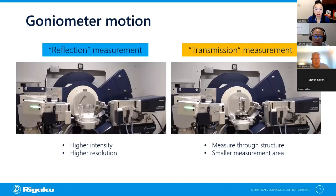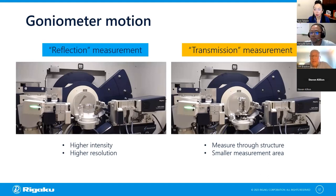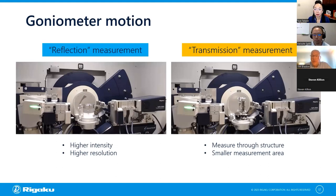In transmission, X-ray transmits through the structure, so you get diffraction peaks from anode, cathode, separator, and even the pouch itself. Also, the beam footprint on the sample surface is smaller compared to reflection geometry because X-ray hits the sample perpendicularly. That's the end of section one. I'd like to take some questions. Tim, did we get some questions? Yes, we did. Michael is asking: where in the battery industry workflow is XRD commonly used — R&D, quality control, or failure analysis?